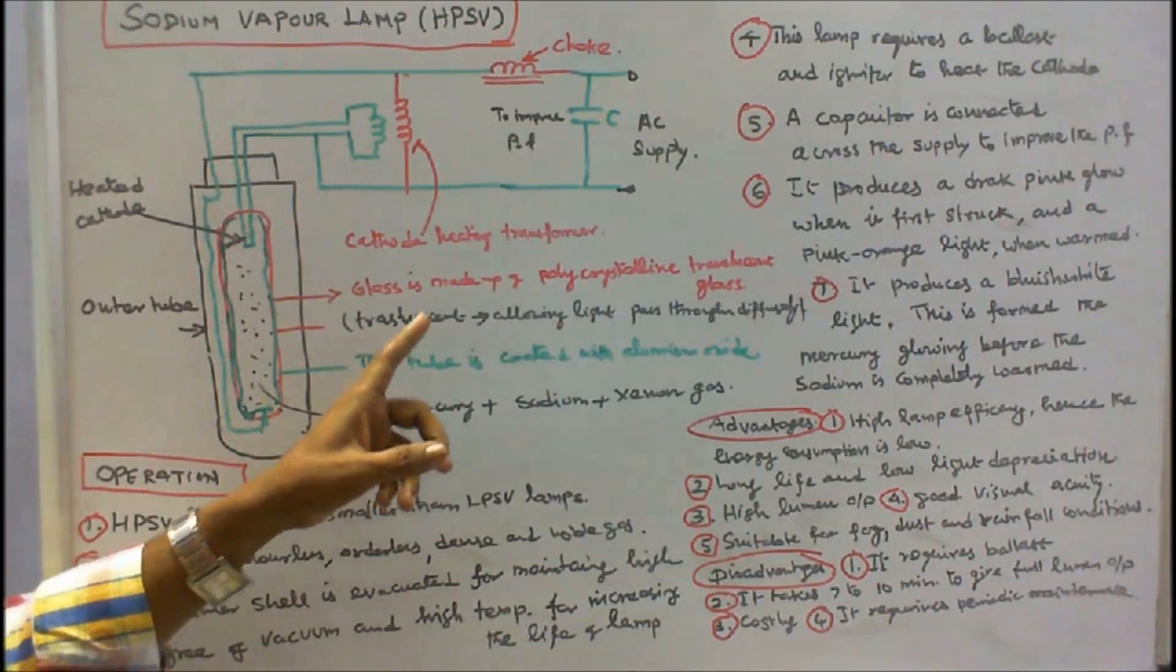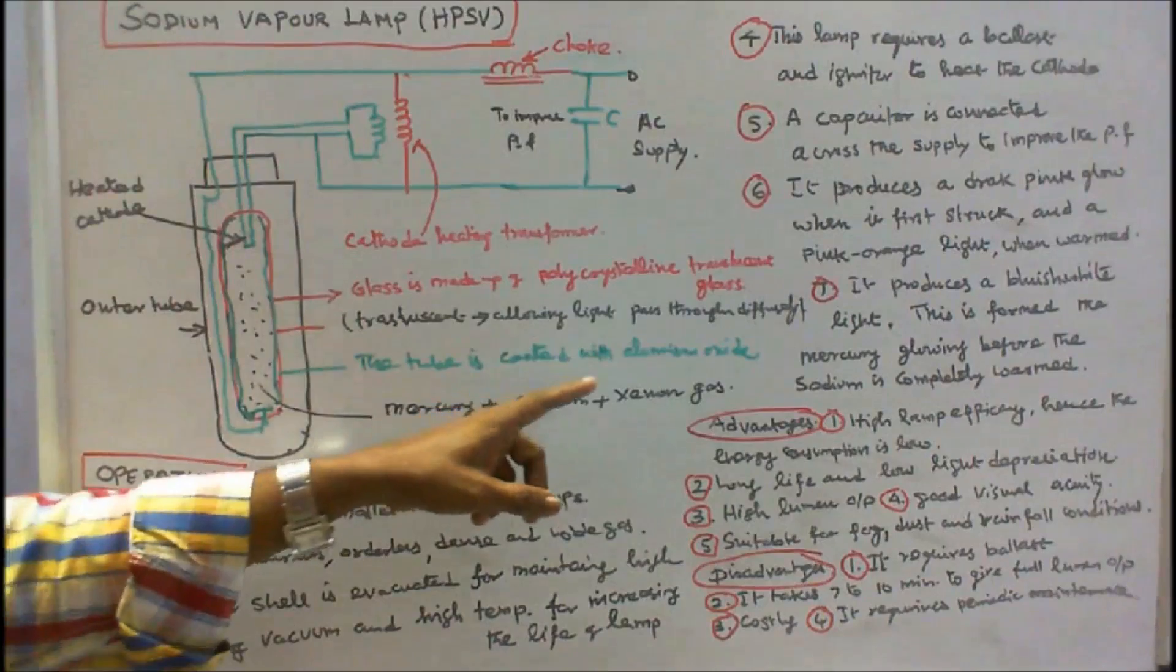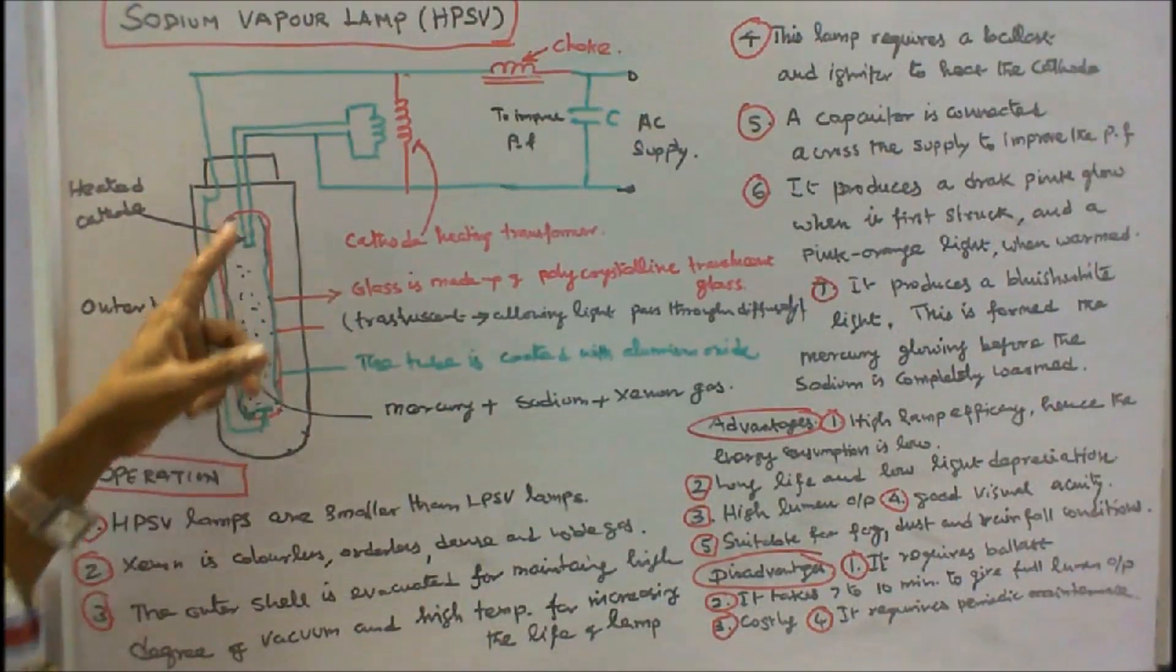Translucent means allowing light to pass through diffusely. The tube is coated with aluminum oxide. That is, the discharge tube is coated with aluminum oxide.